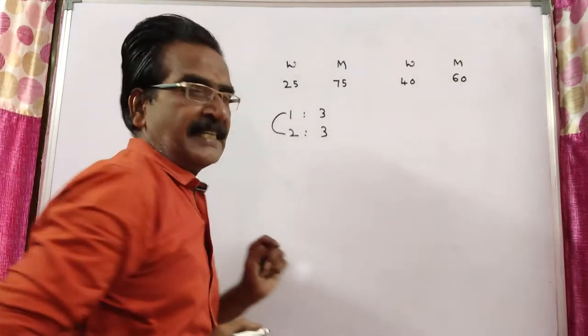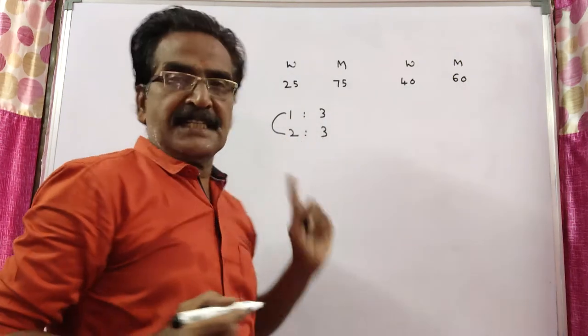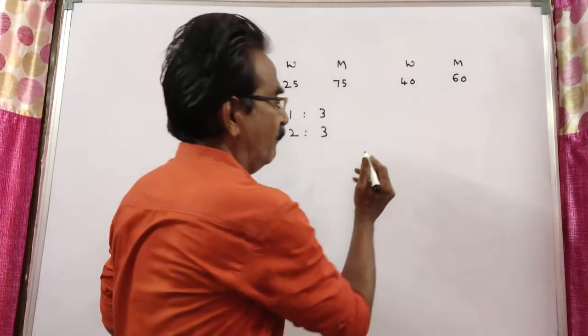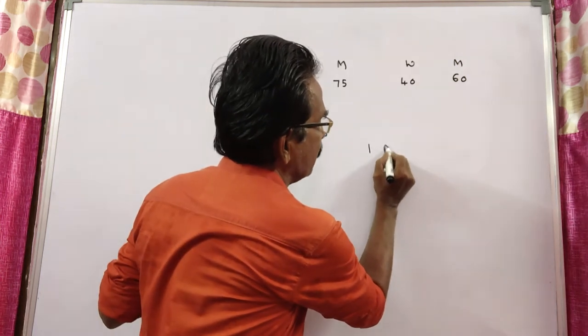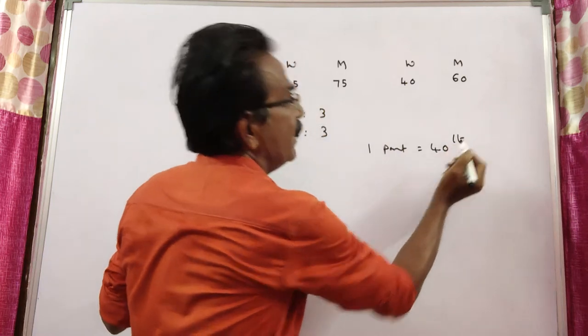Water is increased by 1 part. Milk is the same. Water is increased by 1 part by adding 40 liters of water. So 1 part is equal to 40 liters.